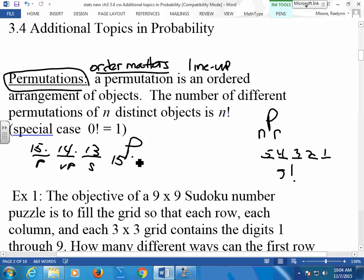Or 15 P3. Remember doing the permutations? Order matters. It matters who I send through as president, who I send through as vice president. There's more permutations than there are combinations, of course. And we'll get to combinations.